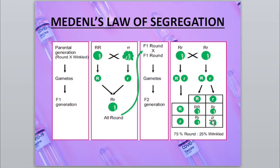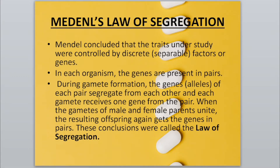The possible phenotypes are two: round and wrinkled. The ratio is 75% round versus 25% wrinkled — that is 3:1. Mendel concluded that the traits under study were controlled by discrete, separable factors called genes. That is, genes are responsible for specific traits appearing in the next generation.